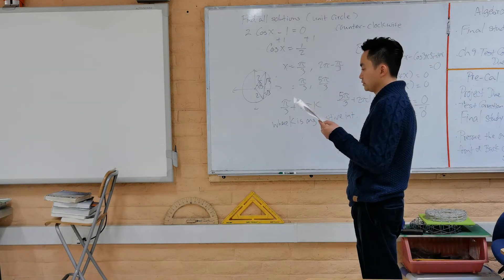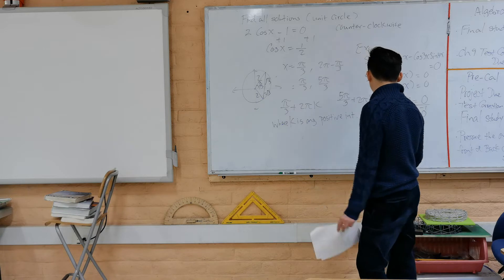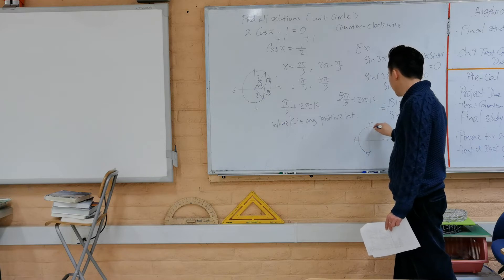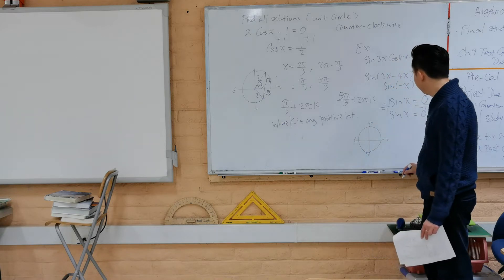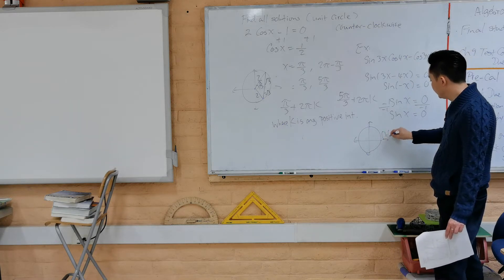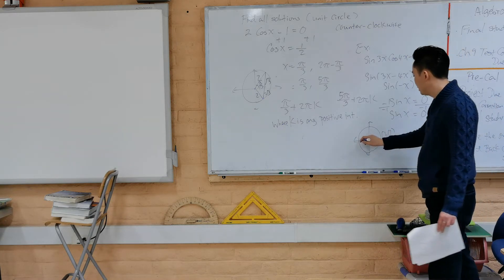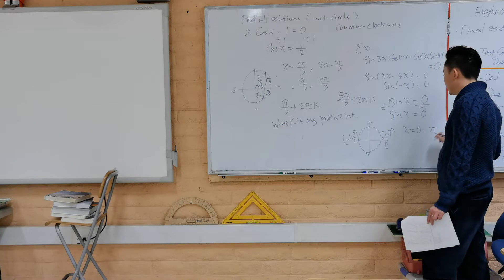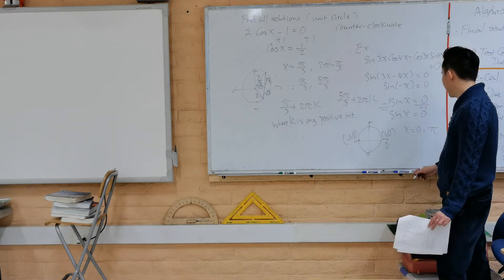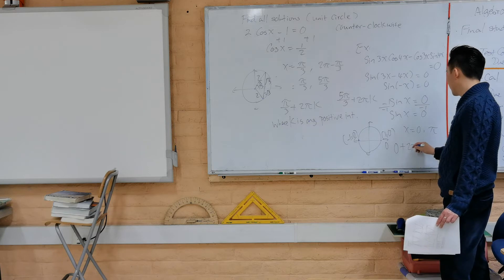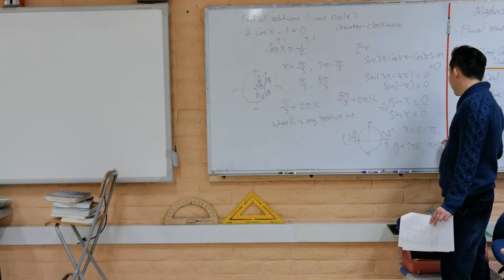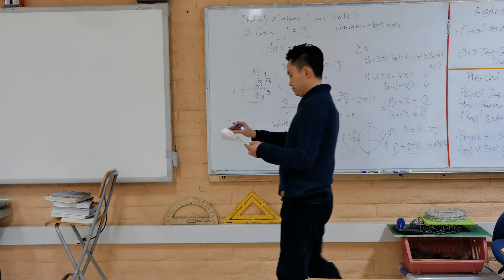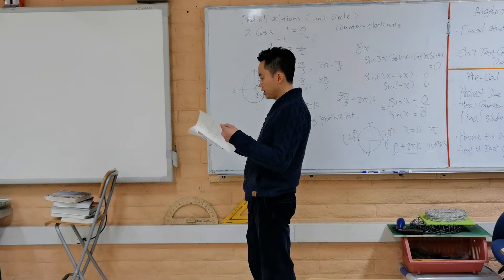Since we need all solutions for sin(x) = 0, we look at the unit circle. Sine equals zero at x = 0 and x = π. Going around the unit circle multiple times, all solutions are: x = 0 + 2πk and x = π + 2πk, where k is any integer.